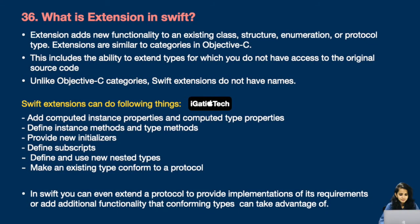Next question: what is an extension in Swift? An extension adds new functionality to an existing class, structure, enumeration, or protocol type. Extensions are similar to categories in Objective-C — this includes the ability to extend types for which you do not have access to the original source code. Unlike Objective-C categories, Swift extensions do not have names.